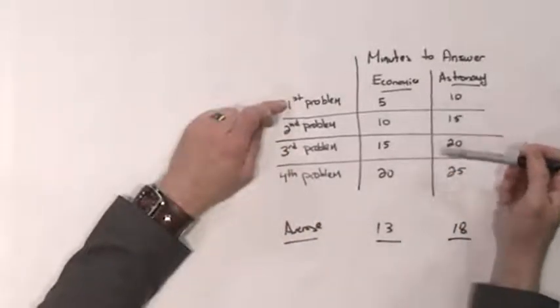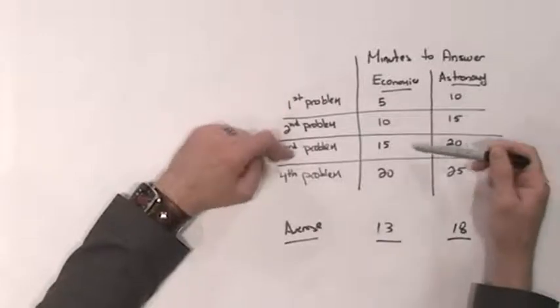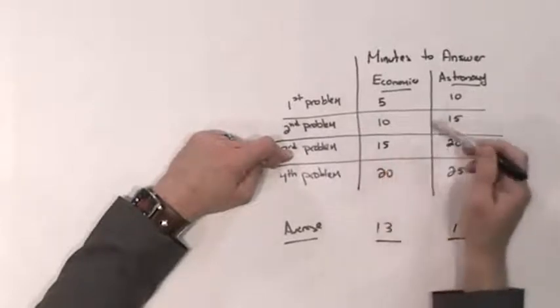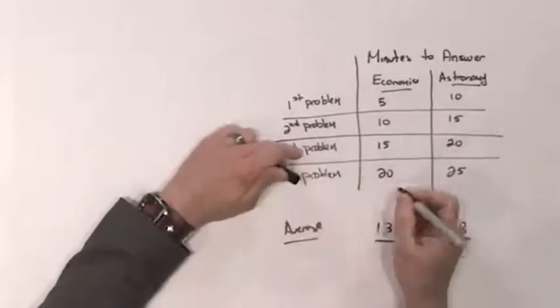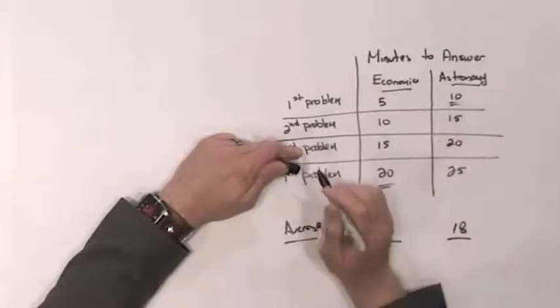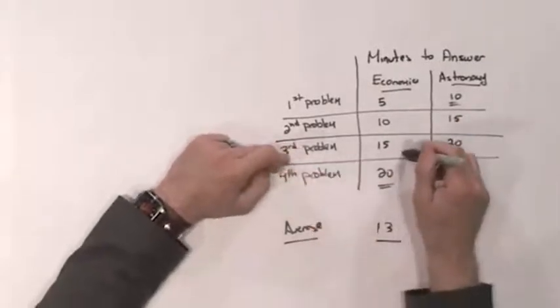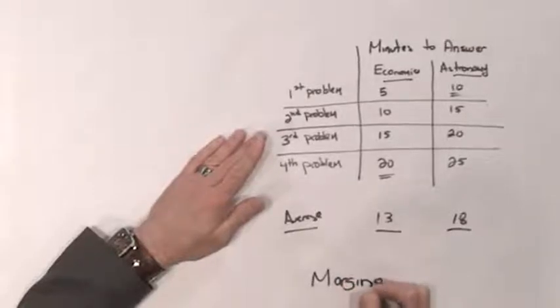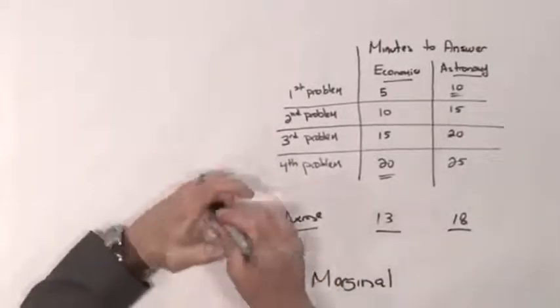Suppose you've already answered three economics problems and no astronomy problems. The next economics problem would cost you 20 minutes — it's the fourth one — but the next astronomy problem costs only 10 minutes. So clearly, answering astronomy is the better decision. The key is the marginal cost — the additional cost of your next action — not the average cost.